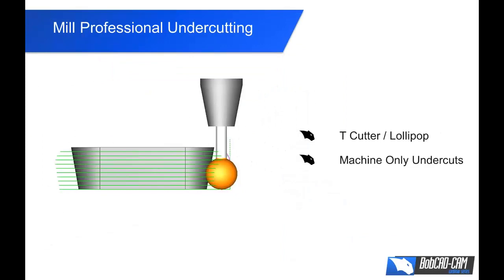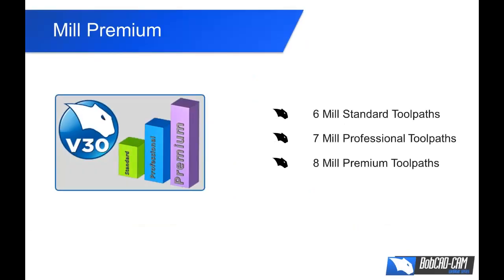We will review the mill professional undercutting using a T-cutter or a lollipop, and go over some of the options available. That is a new feature in version 30 — the ability to do undercutting with the mill professional. The last thing we'll review are the new mill premium toolpaths as an introduction. There are 6 mill standard toolpaths, 7 mill professional, and 8 mill premium toolpaths.